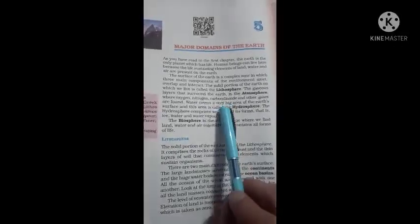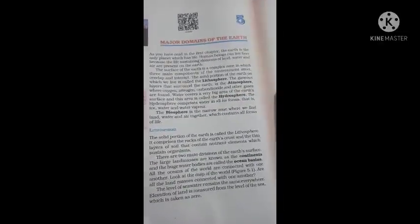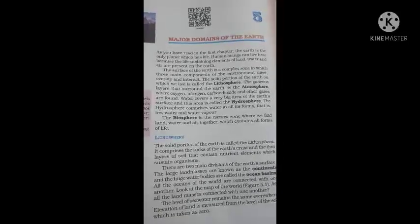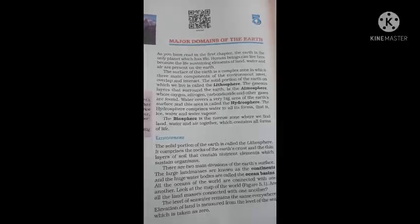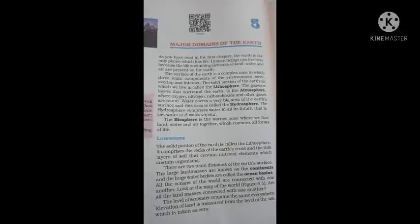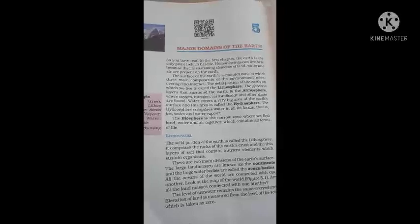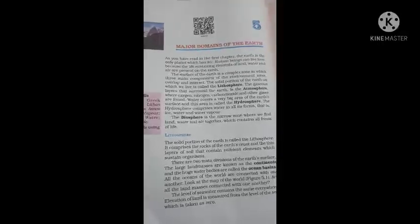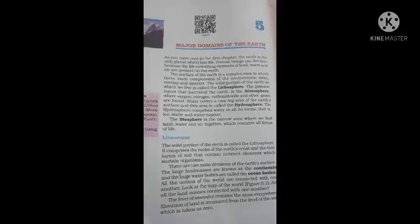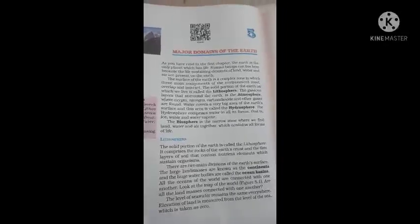Water covers a very large area of the earth's surface and this area is called the hydrosphere. The hydrosphere comprises water in all its forms — ice, liquid water, and water vapor. The biosphere is a narrow zone where we find land, water, and air together, and which contains all forms of life.